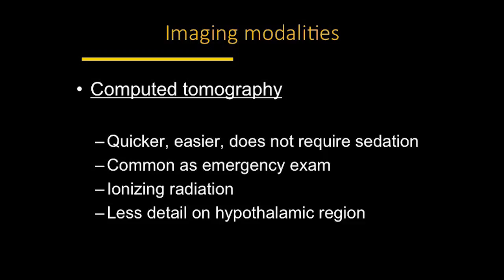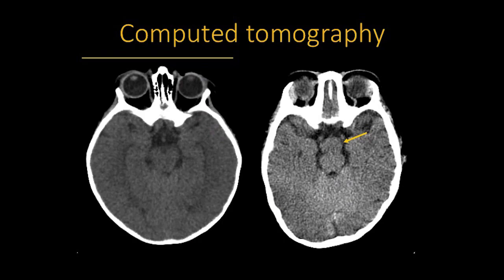The issue with CT is that it uses ionizing radiation, and there's growing concern about the risks of radiation to the developing brain. Additionally, CT provides less detail in the hypothalamic region — many times you can identify a hypothalamic hamartoma on CT, but it doesn't give enough detail for clinicians or surgeons to plan their approach. Here is how a CAT scan looks.